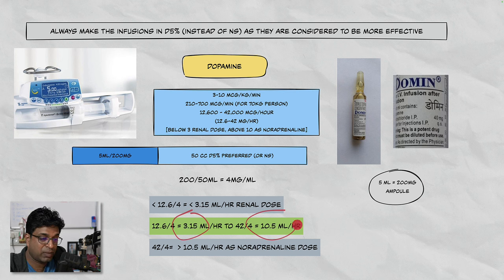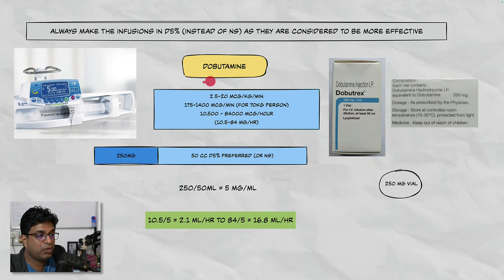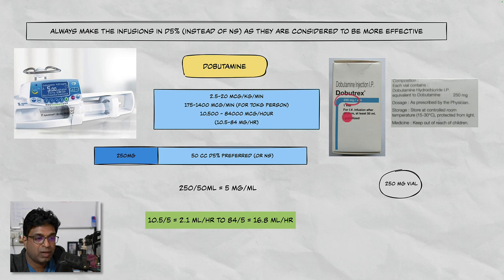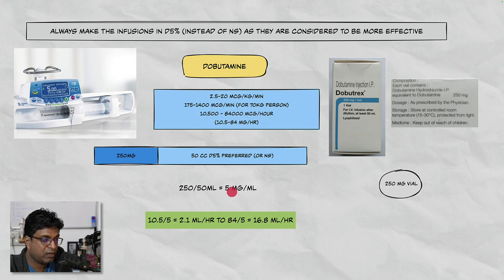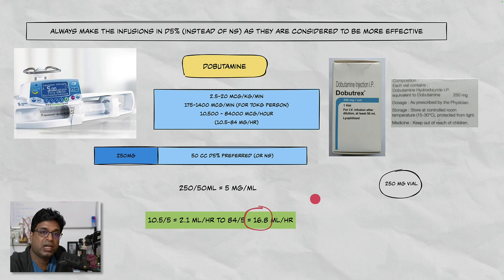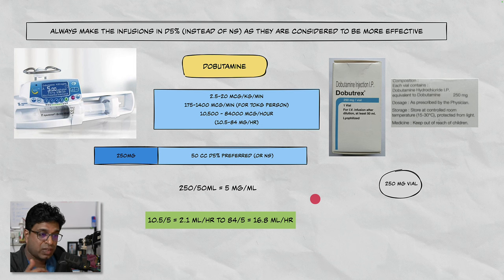Dobutamine comes as a vial containing 250 mg. Mix 250 mg into 50 cc — per mL contains 5 mg. The usual dose is 2.5 to 20 micrograms/kg/min. For a 70 kg patient: multiply by 60 to get per-hour dosing in micrograms — approximately 10.5 mg to 84 mg per hour; divide by 5 mg/mL = 2 to 17 mL per hour is the range. Dobutamine will have good inotropic effect, but since it is also a vasodilator, it can cause blood pressure to fall — counter this with adrenaline or noradrenaline.